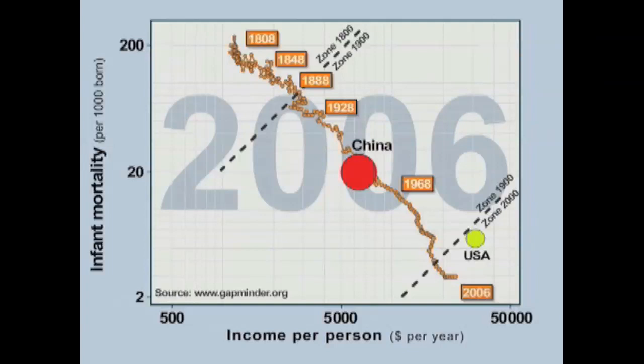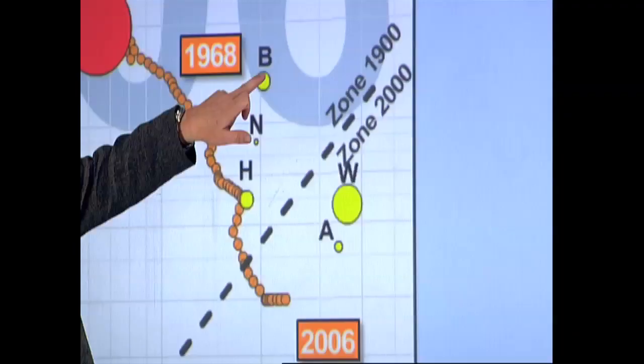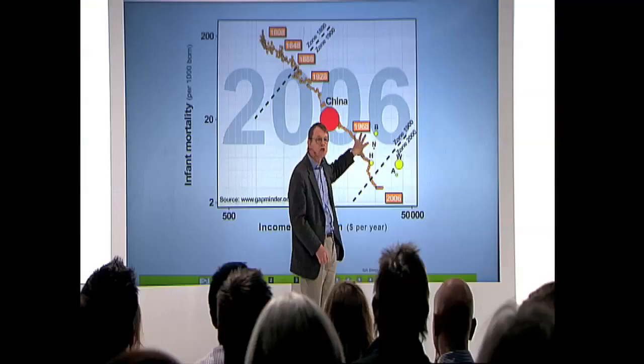Look at United States. I split United States in white, Asians, Hispanic, Native Americans, and black Afro Americans. Different. Three groups end up in the 1900s zone in United States.